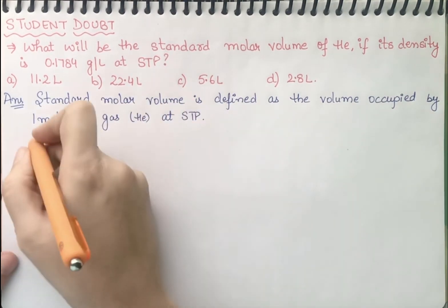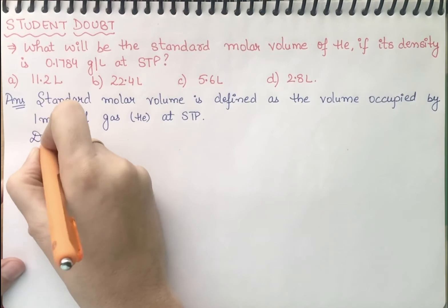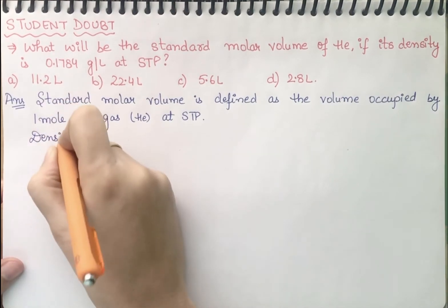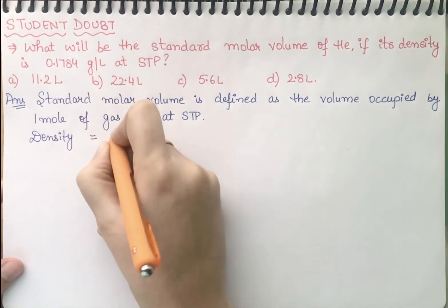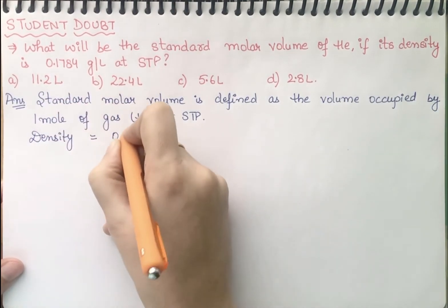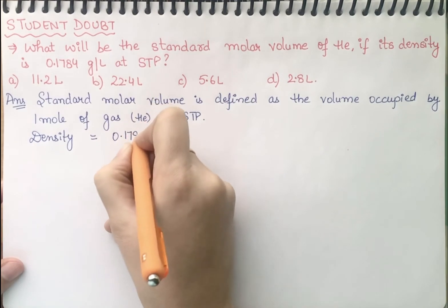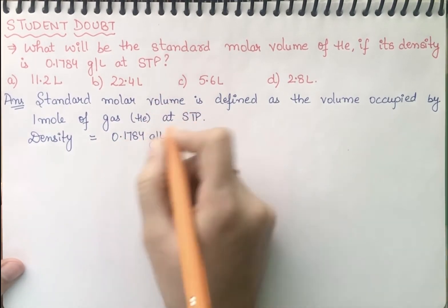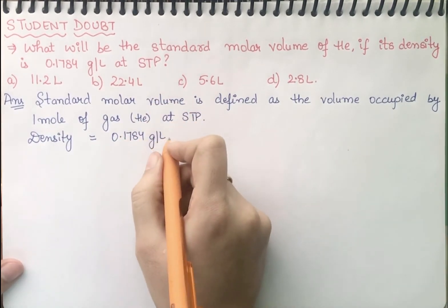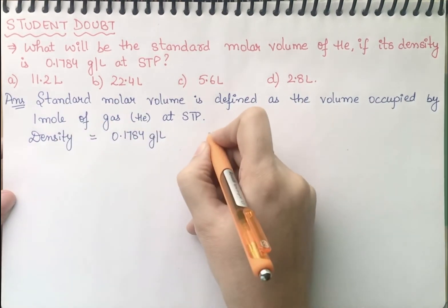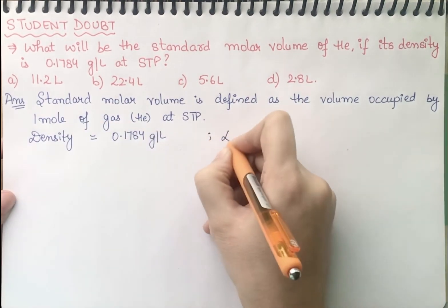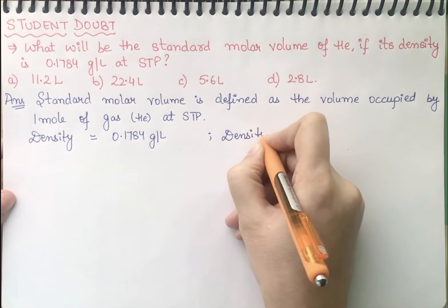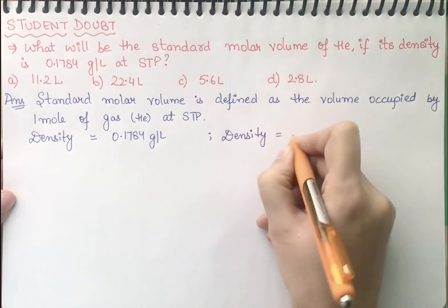Now we are having the value of density: density equal to 0.1784 gram per liter. We are having the value of density, so first of all I will write the formula of density. Density equal to mass upon volume.